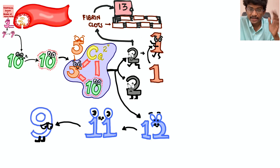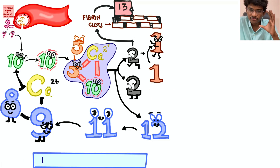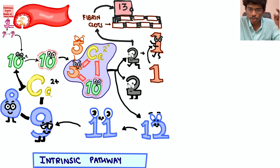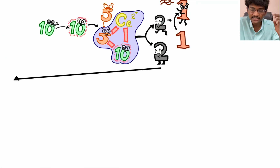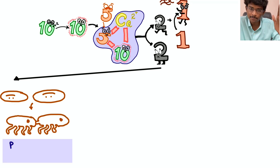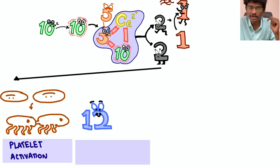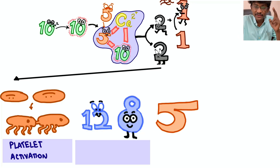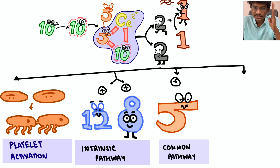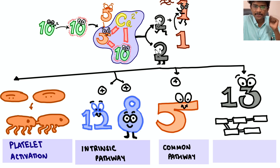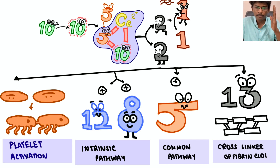Factor 11a converts factor 9 into 9a, and along with factor 8, calcium, and phospholipids, they convert factor 10 into 10a — the common pathway. Thrombin also activates platelets to aggregate and secrete granules, supporting primary platelet plug formation. By activating factors 12, 8, 5, and 13, thrombin drives the entire cascade. If you just inhibit thrombin — directly or indirectly — the entire coagulation cascade can be aborted.